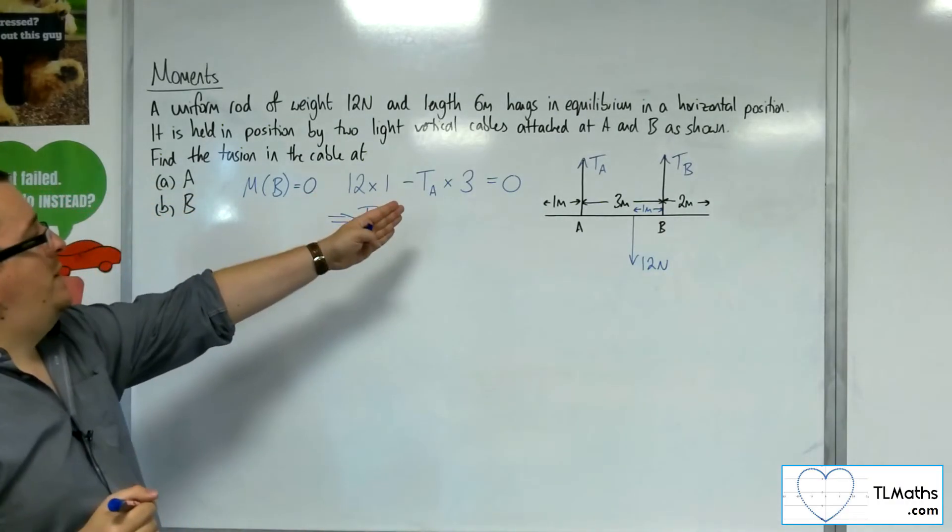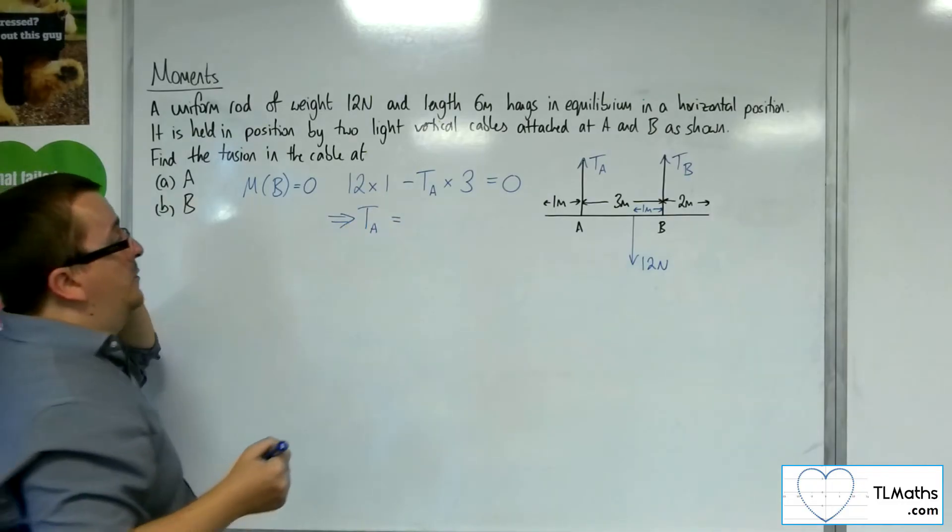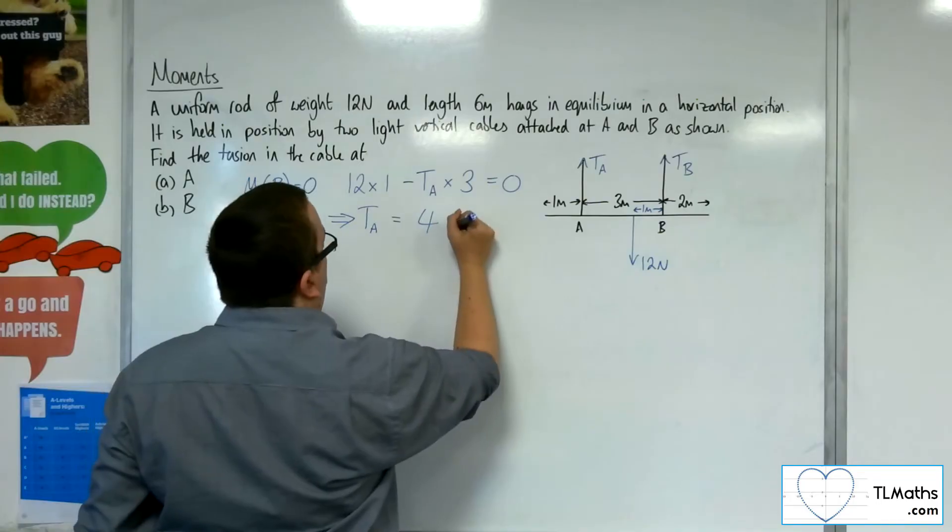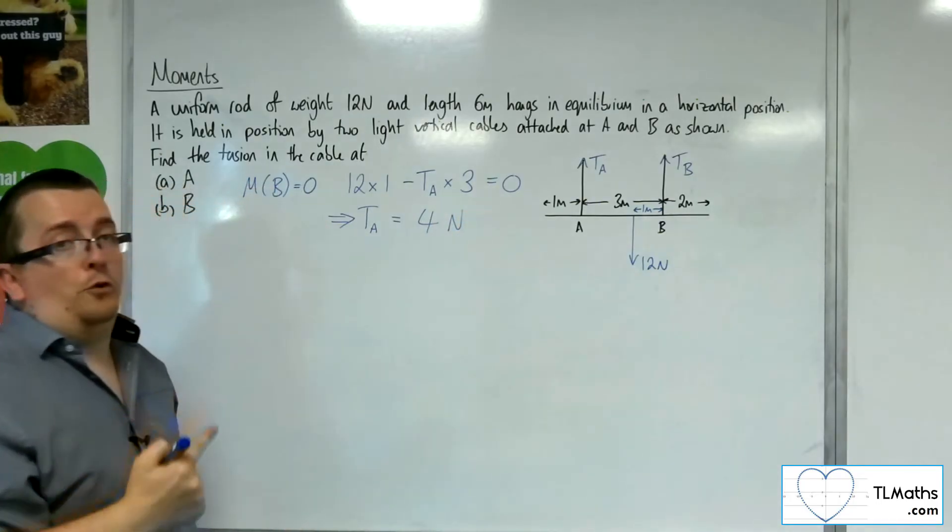So if I add the 3 lots of T_A to both sides, divide both sides by 3, 12 divided by 3 is 4. So that must mean that the tension at A is 4 newtons.